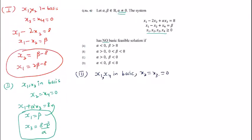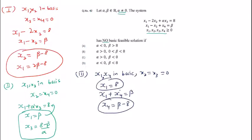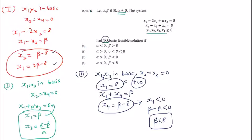For the third basic solution, I put x1 and x4 in the basis and set x2 and x3 equal to zero. This gives x1 = 8 and x1 + x4 = beta, so x4 = beta - 8. Here x1 = 8 is always positive, free of alpha and beta. For no basic feasible solution, x4 must be negative, so beta - 8 < 0, meaning beta < 8. This is a key condition.